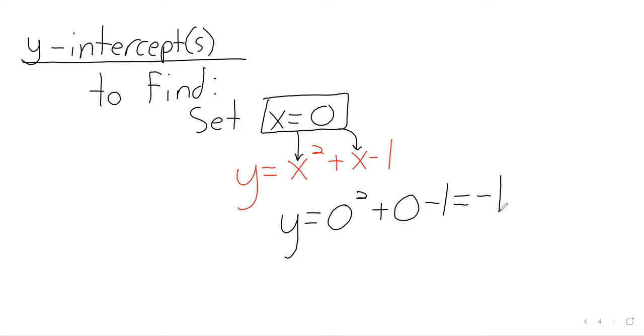y equals 0 squared plus 0 minus 1 is negative 1. So you can just read the y-intercept right off. And in fact, that's... I keep meaning to modify the fast work. I never do. We can look at more complicated